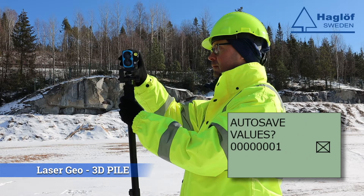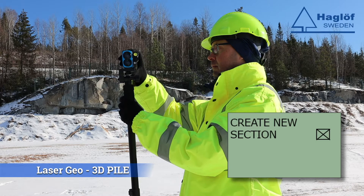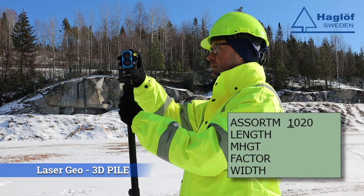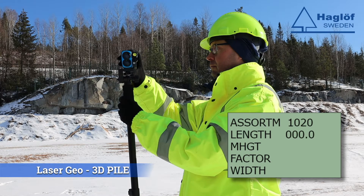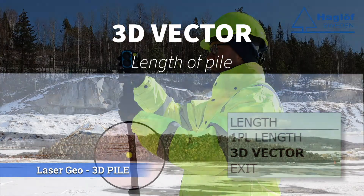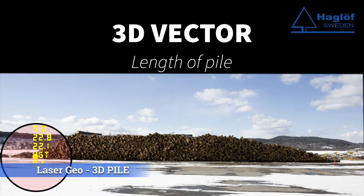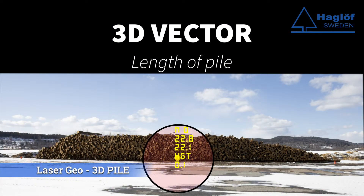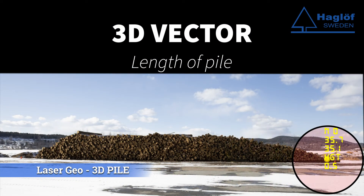After the pile is created, select New Section and go through the settings for the section. Enter the assortment and length. If the length is unknown and must be measured with the instrument, set the value to zero.